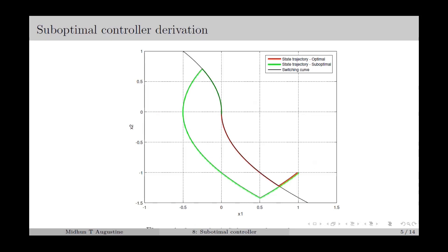Next, we distinguish between optimal and suboptimal. We consider a time optimal control problem where the objective is to reach a desired state from an initial state in minimum time, with the control input bounded between minus 1 and plus 1. The time optimal control input switches between plus 1 and minus 1, with the state trajectory following a parabola for each value. This was also observed in the previous case of the twisting controller and Zeno phenomenon.